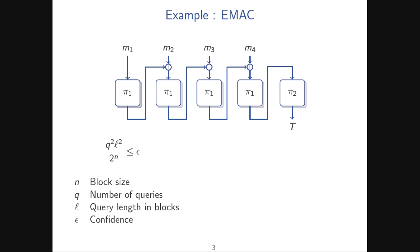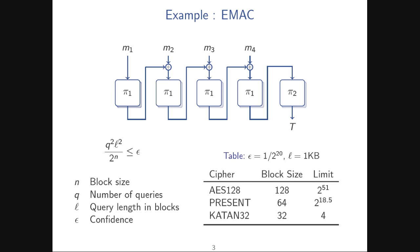The initial security bounds for EMAC are of the form: Q is the number of adversary queries, L is the message length, and N is the block size of the block cipher or permutation. You get a polynomial in the adversary's resources divided by 2 to the N. For a confidence level of 1 in a million (1 over 2 to the 20) and messages of about a kilobyte, plugging in AES-128, Present-64, or Catan-32 shows dramatically different query limits: 2^51 queries for AES, 2^18.5 for Present, and only 4 queries with a 32-bit block size before entering the insecure zone.